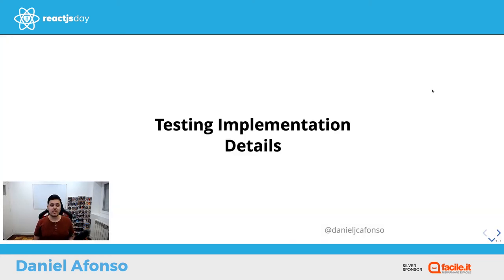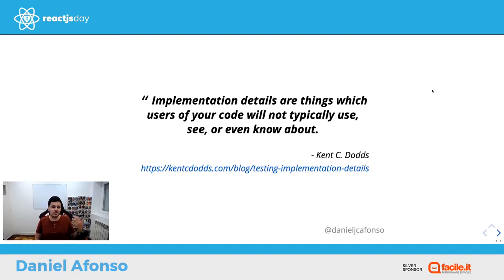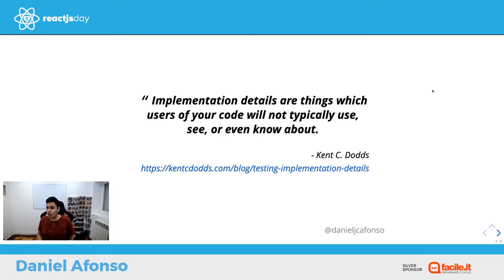We did some research and concluded there was only one guilty party: implementation details. As Kent C. Dodds says, implementation details are the things which the users of your code will typically not use, see, or even know about. Things like component state, the props a component received, and so on.